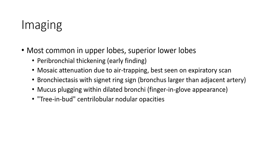Most common imaging findings are in the upper lobe and superior segments: peribronchial thickening or cuffing, mosaic attenuation due to air trapping on inspiratory or expiratory scan, bronchiectasis with signet ring signs, mucus plugs within dilated bronchi, tree-in-bud pattern, and centrilobular nodular opacity.